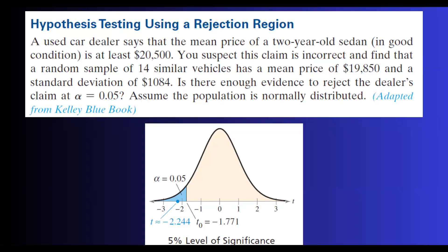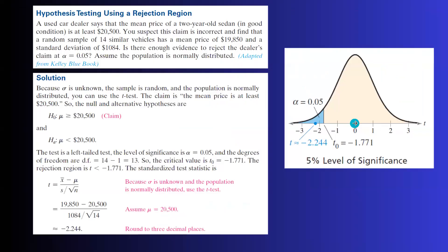This is an example of a left-tail test. First of all, since sigma or population standard deviation is missing and the sample is random and the population is normally distributed, all coming from the question, you're going to use a t-test.